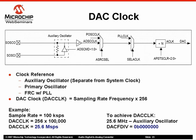Now let's take a look at a quick example. Suppose the sample rate we want to achieve is 100 kS per second. This would mean that the required DAC clock must be equal to 100 kS per second times 256. So, to obtain the 25.6 MHz clock, we will select an external crystal for the auxiliary oscillator of the same frequency. Since we have the exact oscillator frequency, all postscalars will be set to a divide by one.